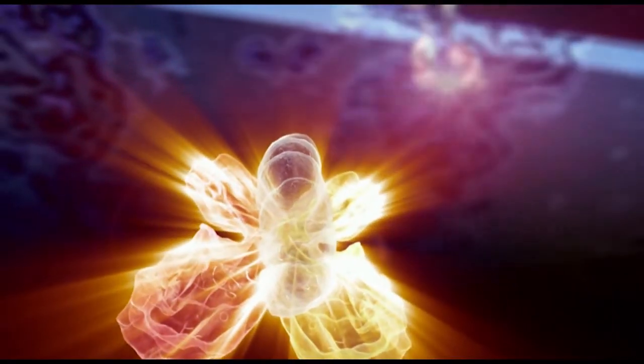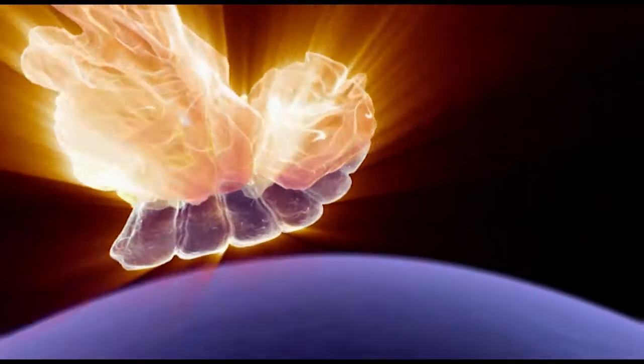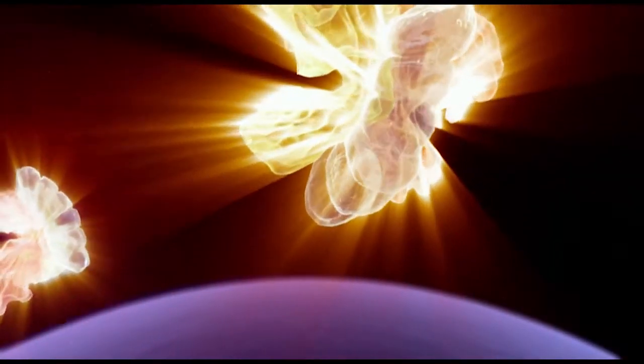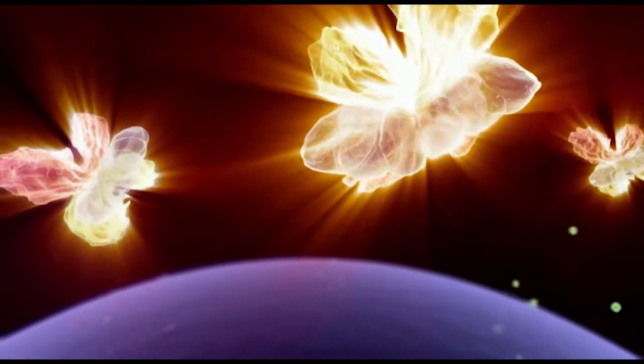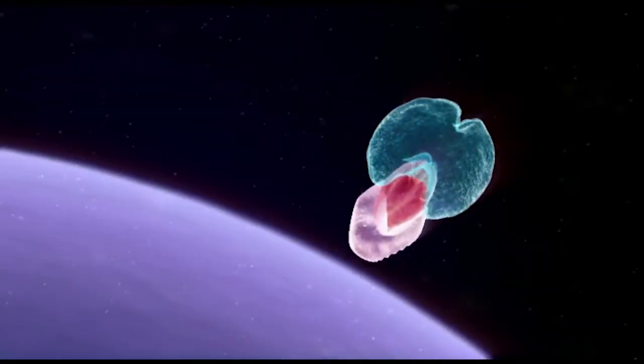Inside the chondrocyte, diacerein inhibits the degradation of I-kappa-B into NF-kappa-B and its translocation into the nucleus. This reduces IL-1 induced expression of catabolic factors such as cytokines, NO and MMPs.